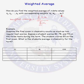An easy way to do a weighted average calculation is to use a table. In the first column, you put the data values, x. In the second column, you put the corresponding weight values. And in the third column, you find the product of the data value and its weight.